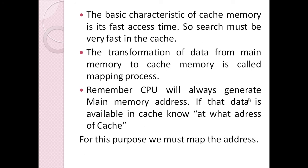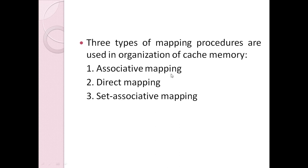The CPU always generates a main memory address — called a physical address — to request data. Since data is copied from main memory into cache, we need to know what main memory address maps to what cache address. This is the address mapping process. Whenever the CPU generates a main memory address, if the data is in cache, we must know where it is located in cache. There are three types of mapping procedures used in cache memory organization: associative mapping, direct mapping, and set-associative mapping, which will be covered in upcoming videos. This concludes the introductory part of cache memory.